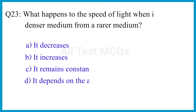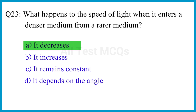Question number 23. What happens to the speed of light when it enters a denser medium from a rarer medium? The correct answer is option A. It decreases.